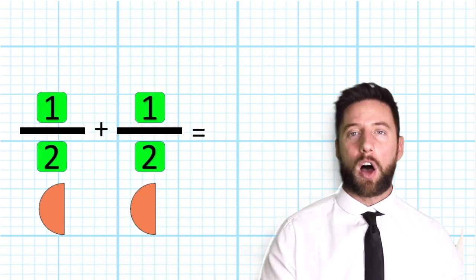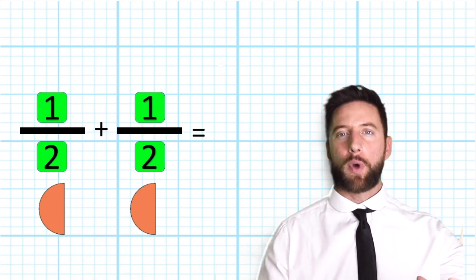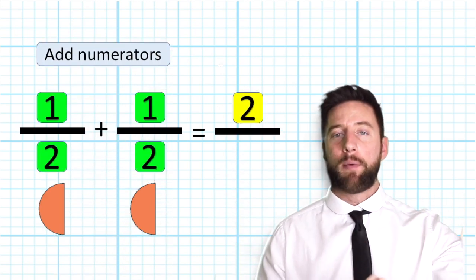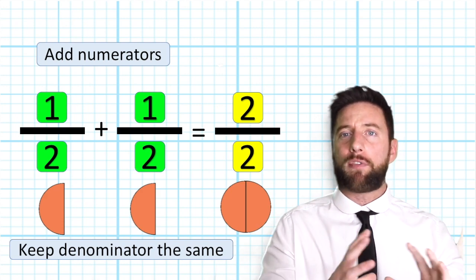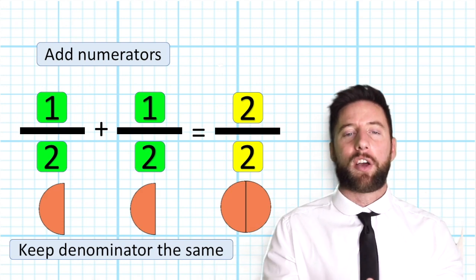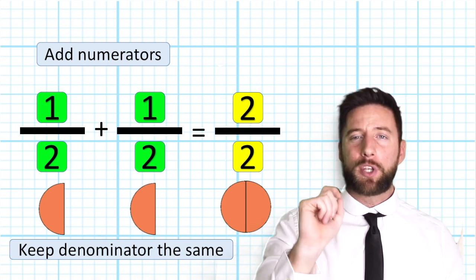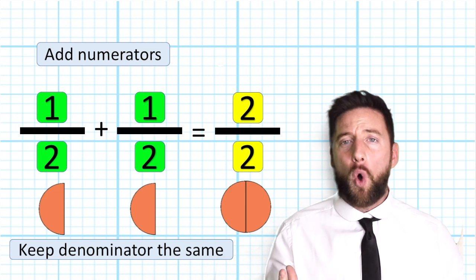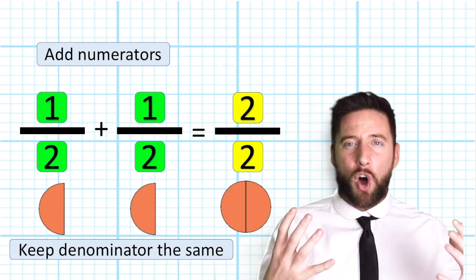So if we look at that with our halves again, we have 1/2 and 1/2. So we're going to add our numerators, one add one is two, but we're going to keep our denominator, the name, the same because the value of our fractions haven't changed. So 1/2 add 1/2 is 2/2 is a whole. That's right, one half add one half is a whole, fantastic.